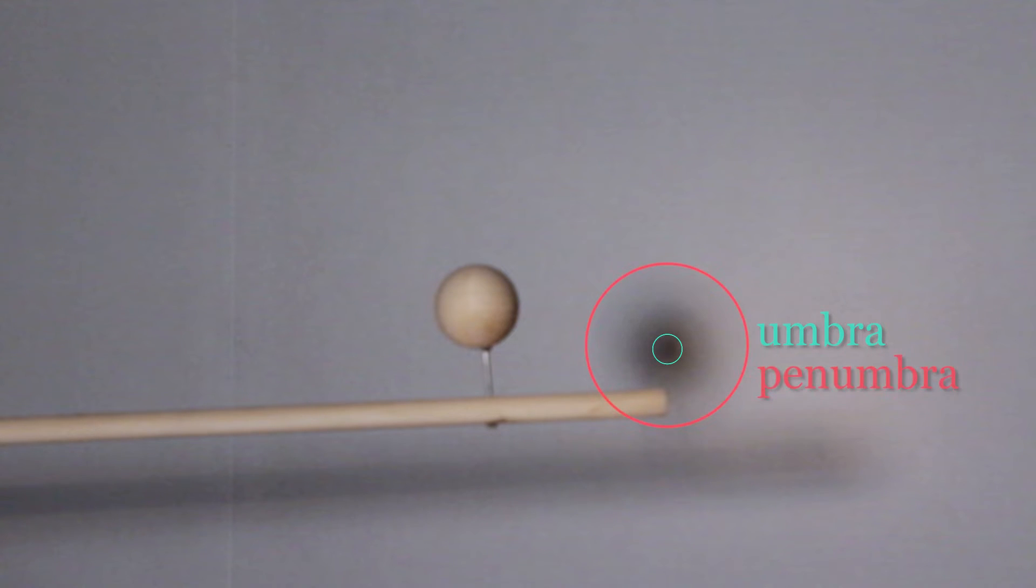The lighter part of the shadow is called the penumbra, which is a cone of infinite length. If an observer's eye is inside the penumbra, they can see part of the source, but not all of it.